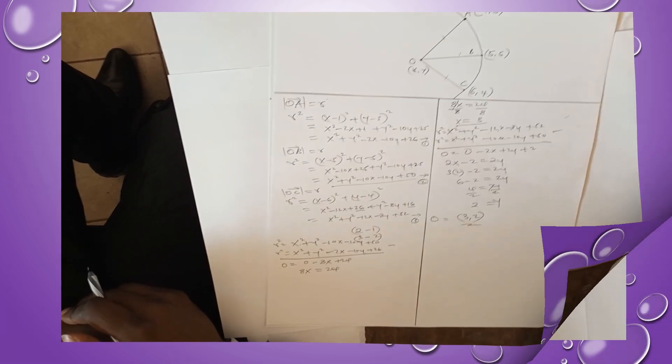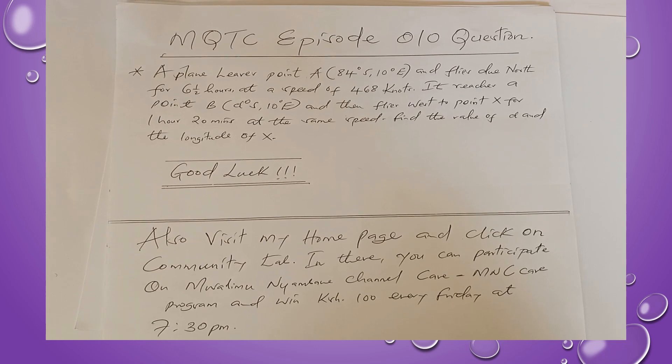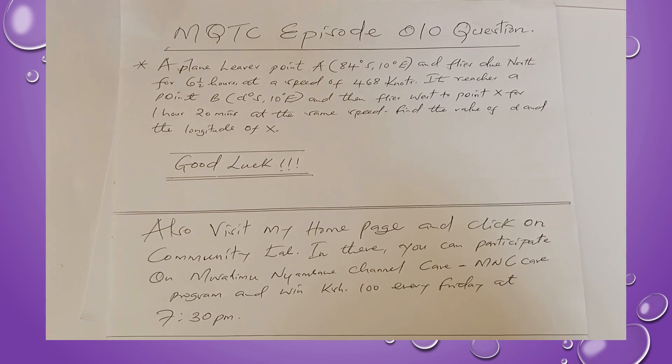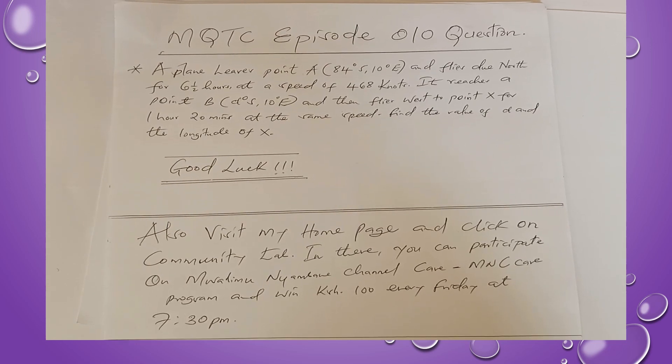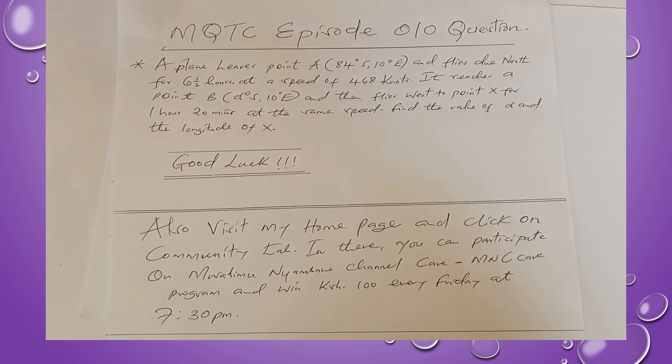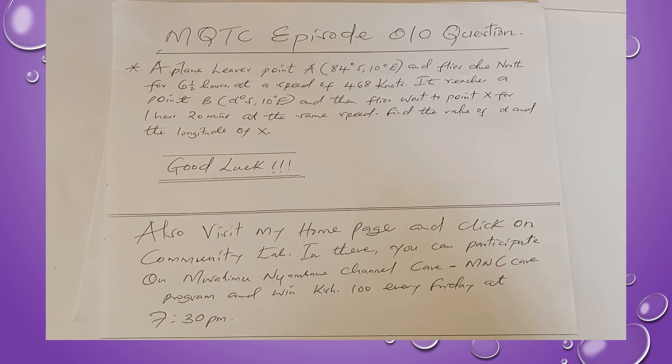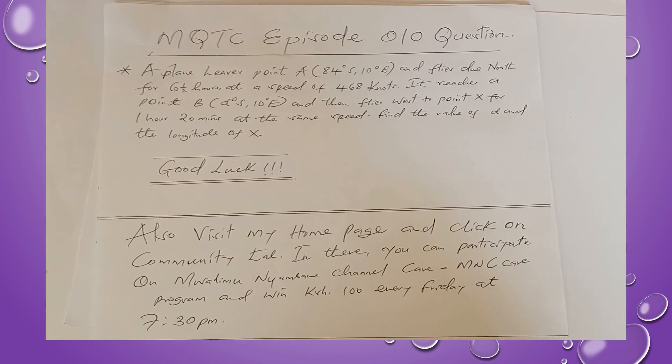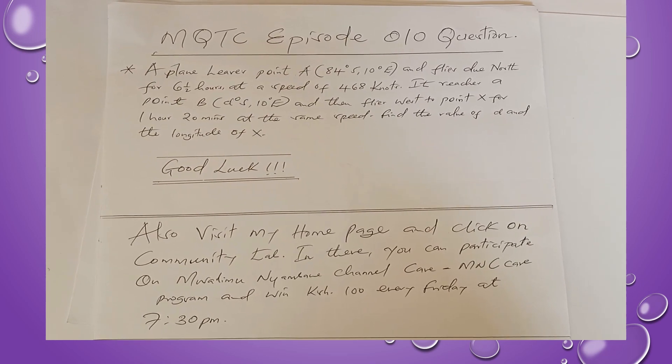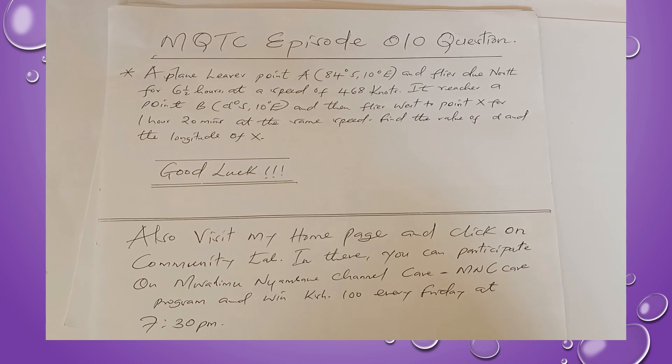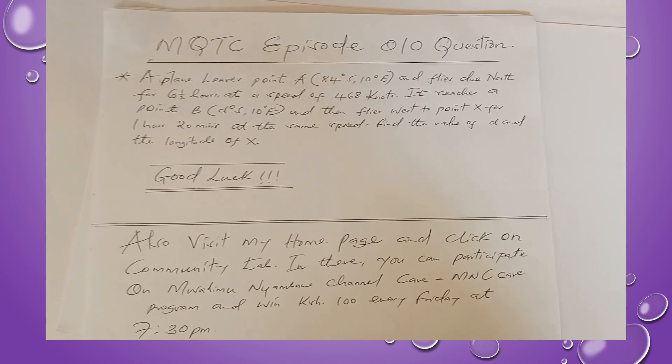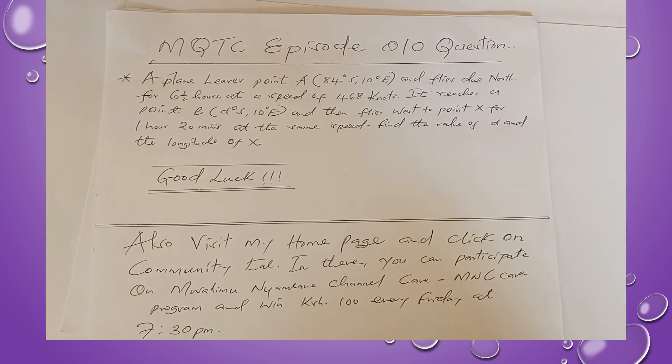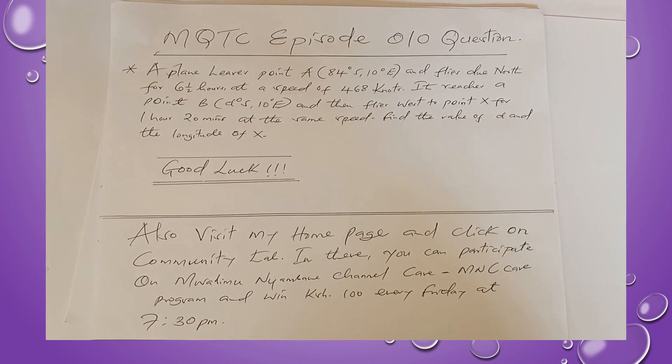The question for MQTC episode 010 is here for us. The question says: a plane leaves point A whose coordinates are 84° South, 10° East and flies due north for six and a half hours at a speed of 468 knots. It reaches a point B whose coordinates are α° South, 10° East, and then flies west to point X for 1 hour 20 minutes at the same speed. Find the value of α and the longitude of X. Good luck!